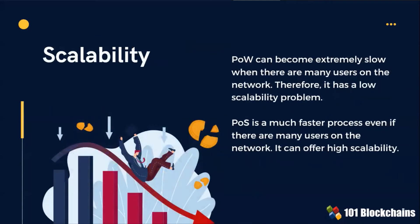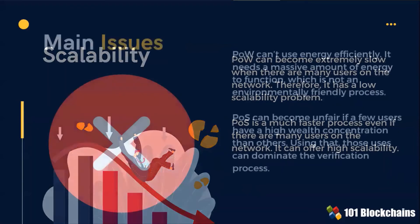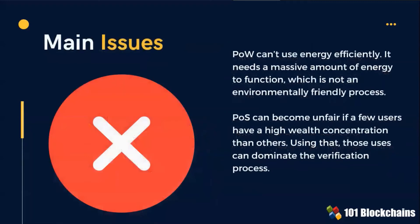In terms of scalability, Proof-of-Work has a low scalability problem, whereas Proof-of-Stake is a much faster process and can offer high scalability. The main issues are: in Proof-of-Work, you cannot use energy efficiently; and Proof-of-Stake can become unfair if a few users have a higher wealth concentration than others.